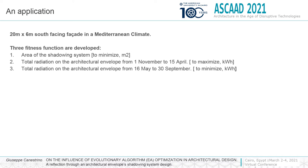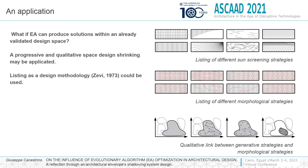Three fitness functions are developed regarding the total mass of the shadowing system and the total solar radiation in both hot and cold months. The proposed design principle is based on ensuring that EA can produce an expected solution, but instead working in an already validated design space. This ensures that an evaluation of unquantifiable aspects of architecture has been done before the use of EA to ease subsequent decision making.